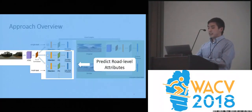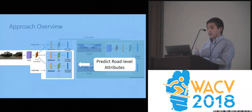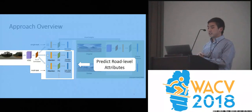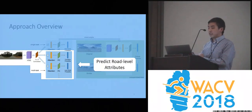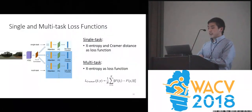The multi-task component is responsible for predicting the road-level attributes. Each attribute's prediction process is similar to the star rating one, starting with the same panoramic image, followed by VGG and one-by-one convolutional layer — which is shared with the single task — and then followed by a task-specific attention layer and fully connected layer to obtain the predicted probability distribution. For both tasks, we minimize the cross-entropy loss, but for single task we also minimize the Kramer distance as the star rating label is ordinal.